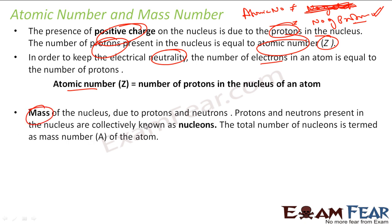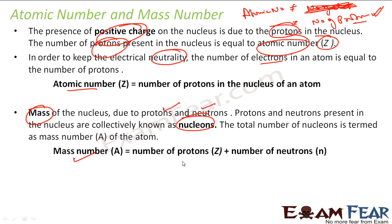Atomic mass — if you see, the mass is due to protons and neutrons. Electrons have very, very little mass, so we neglect it. Protons and neutrons collectively are called nucleons. The mass number is nothing but the number of protons and neutrons. So for atomic number and atomic mass, we don't even talk about electrons.